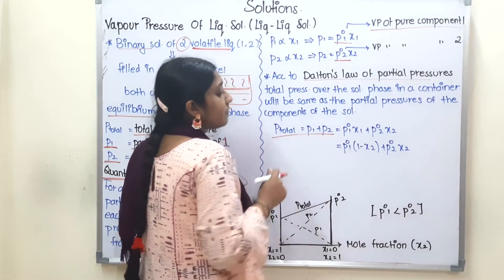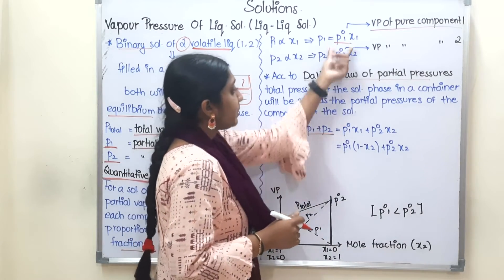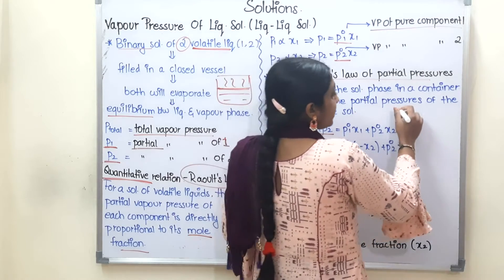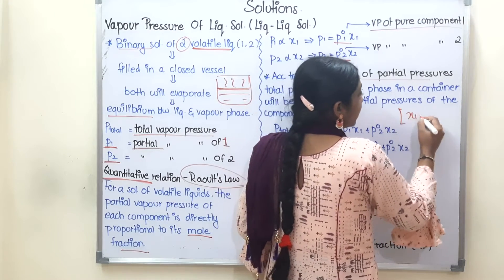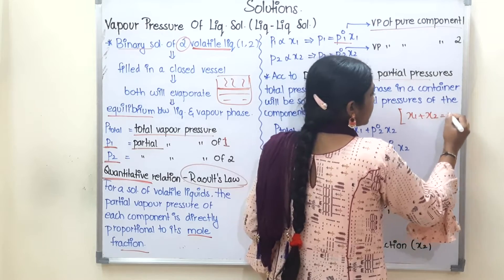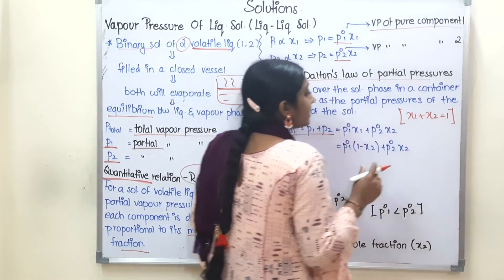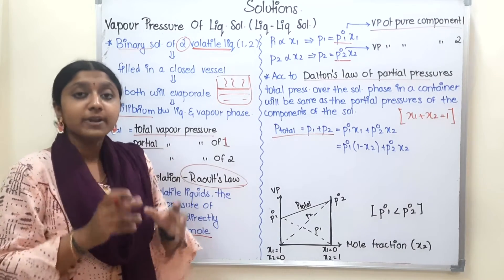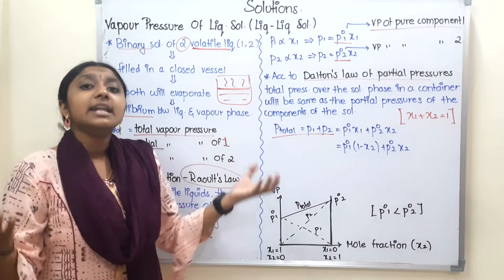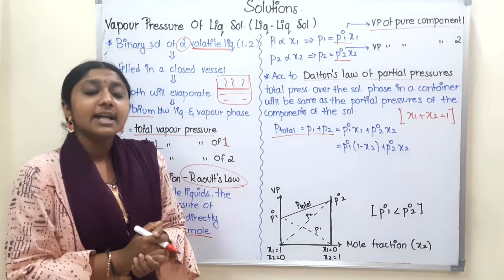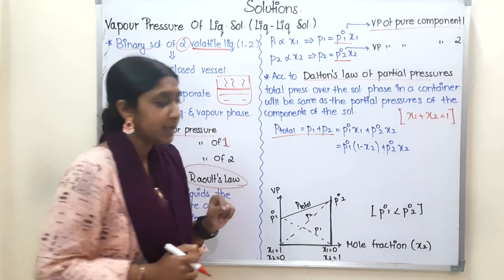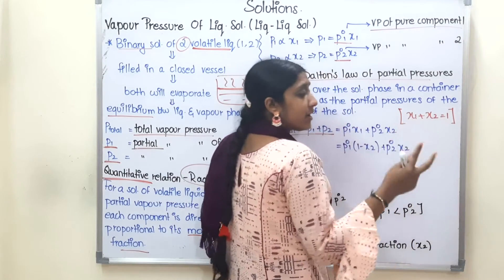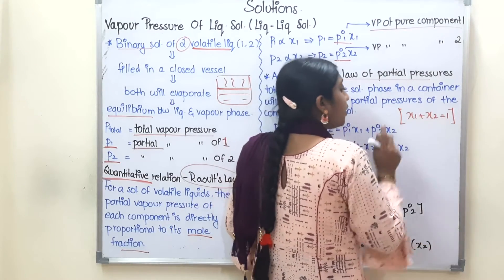Now let's apply Raoult's Law formula. If P1 = P01 · X1 and P2 = P02 · X2, we also know that X1 + X2 = 1. For any solution, the sum of the mole fractions of all components equals 1. We have already discussed this formula. Now, we have two components, so X1 + X2 = 1.